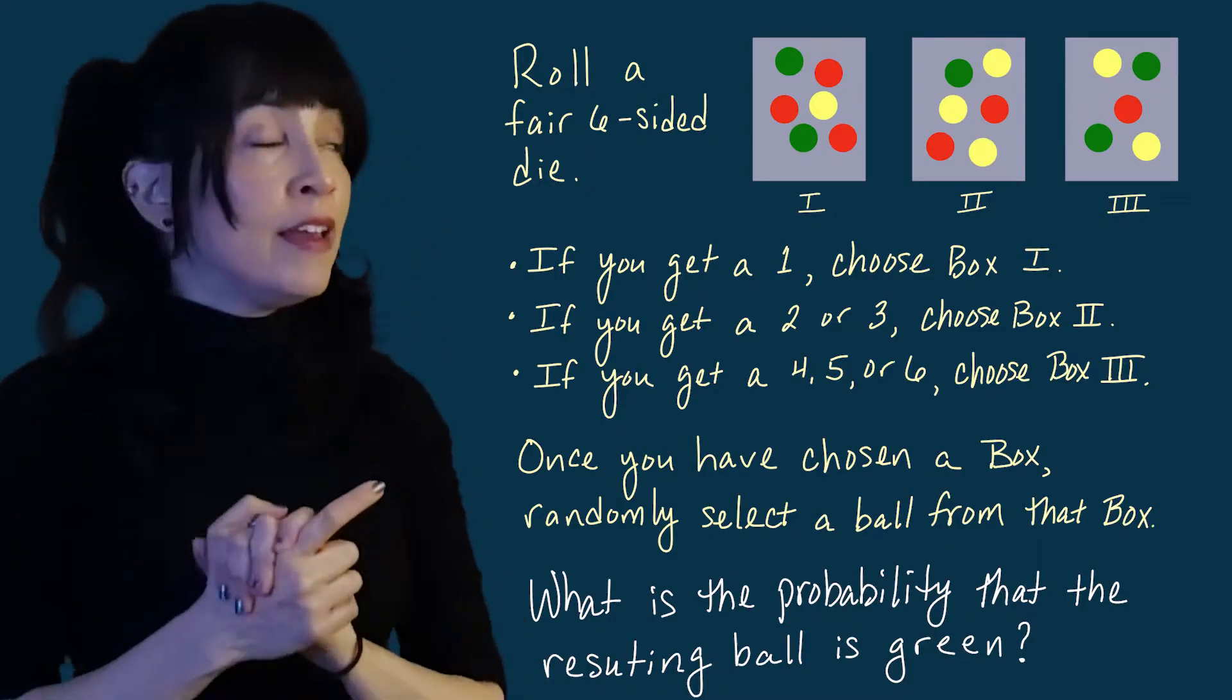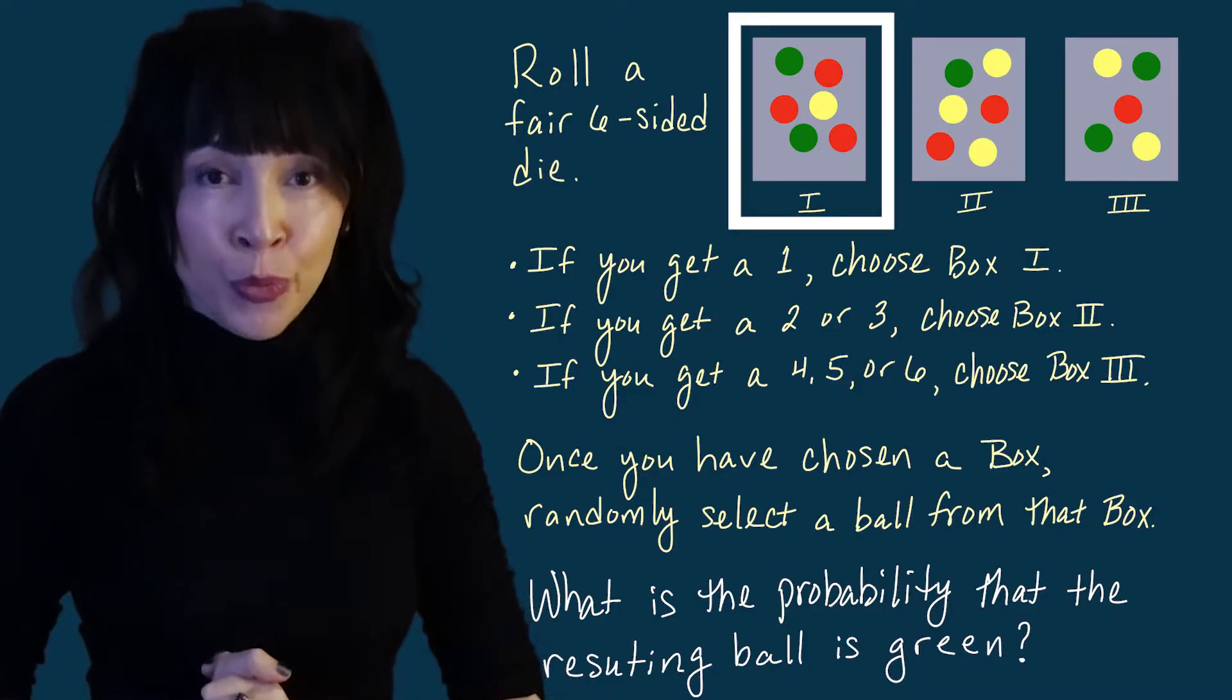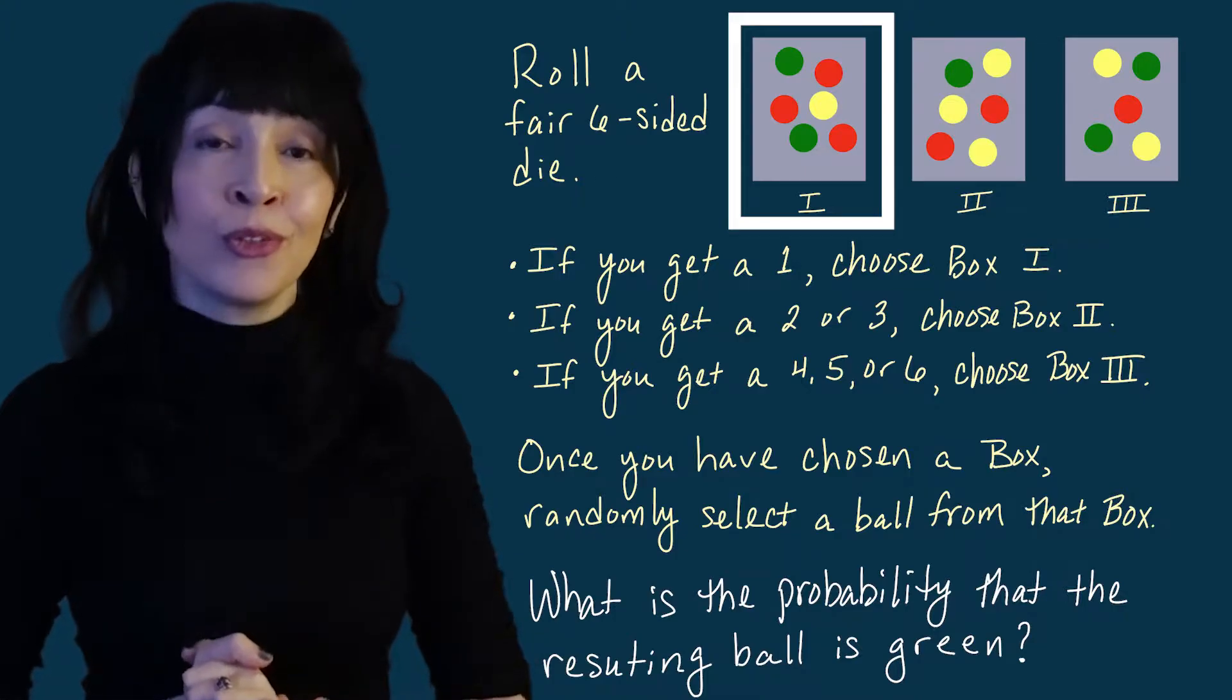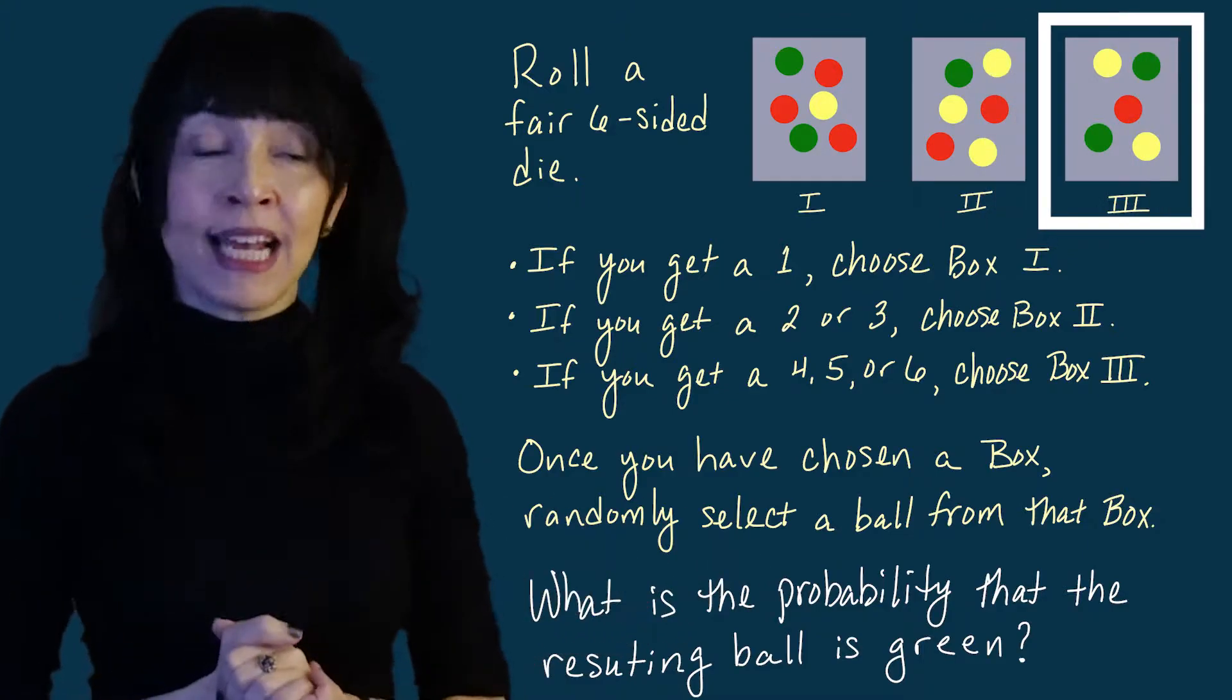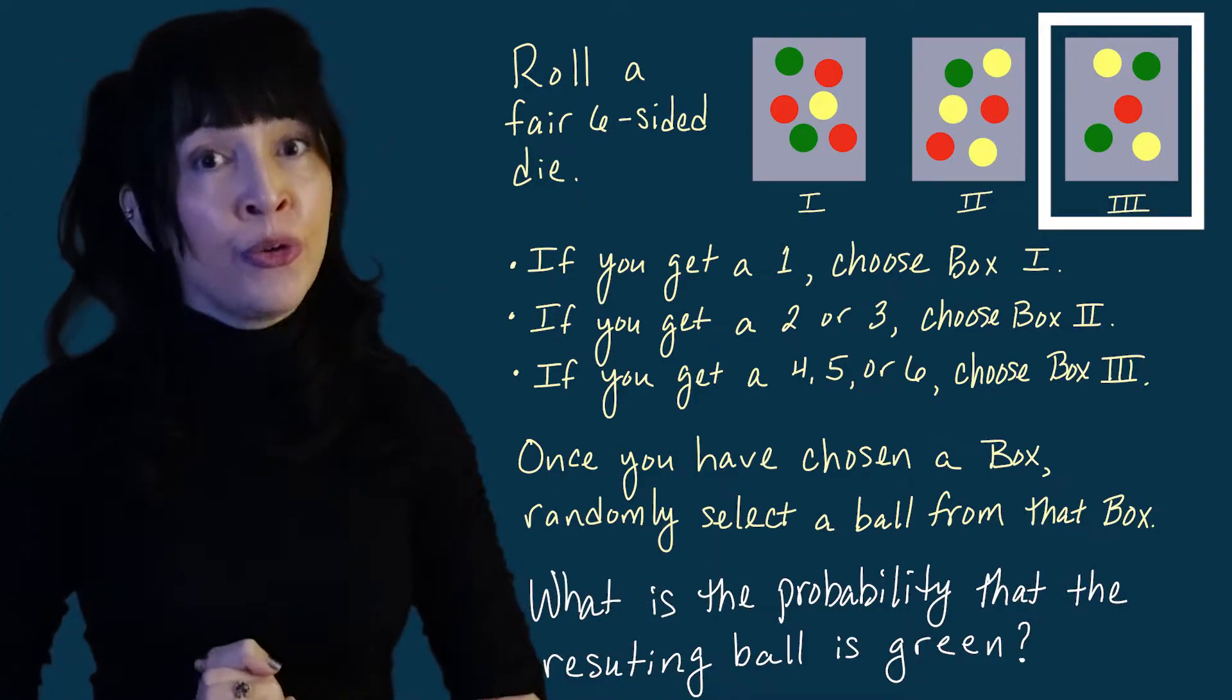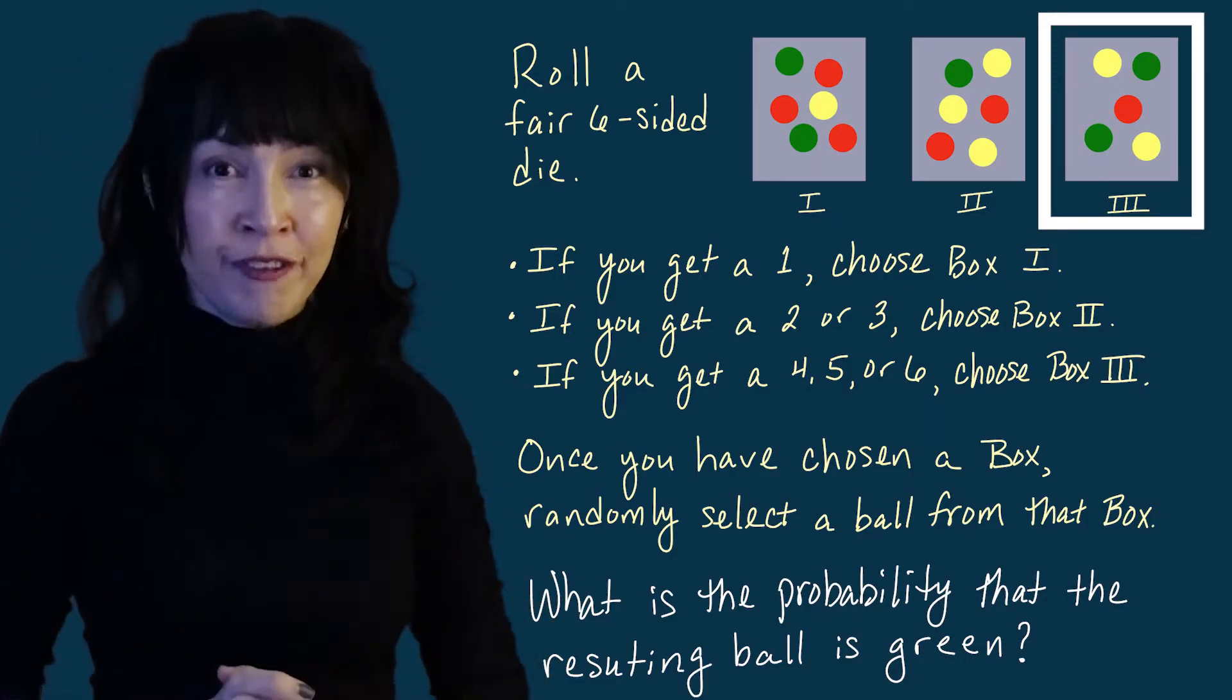For example, if I chose or given I know that the ball came out of box one, then I know the probability of choosing a green ball is two out of six or one third. Whereas if I'm given that the ball came out of box three, for example, then I know the probability of choosing a green ball is two out of five, because there's two green balls there out of a total of five balls.